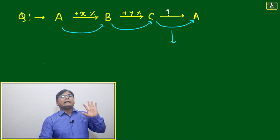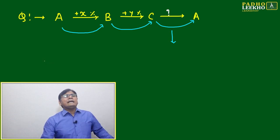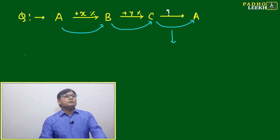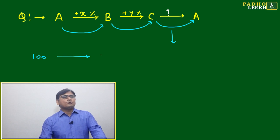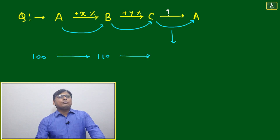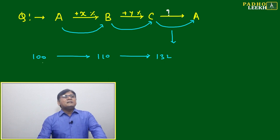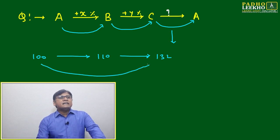But we'll try to understand by taking any value of x and y. Just suppose we have taken x equal to 10, then it has become 110. Y we have taken 20, so we have to add it, it will become 132.